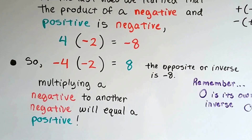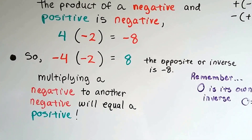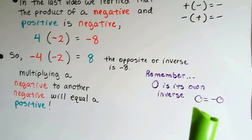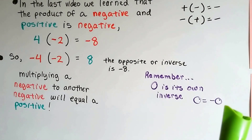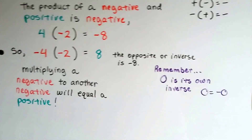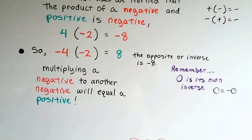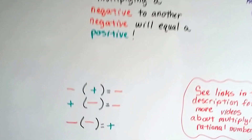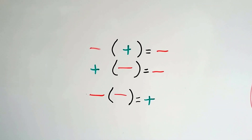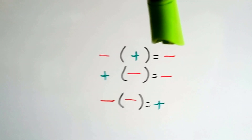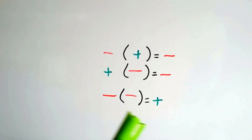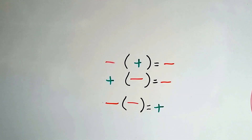Multiplying a negative to another negative will equal a positive. Remember that zero is its own inverse — zero equals negative zero. A positive zero and a negative zero are exactly the same thing; zero doesn't have an opposite across zero on the number line — it is the middle. So when we multiply a negative times a positive, or a positive times a negative, we get a negative product. But as soon as we multiply two negatives together, we get a positive product.